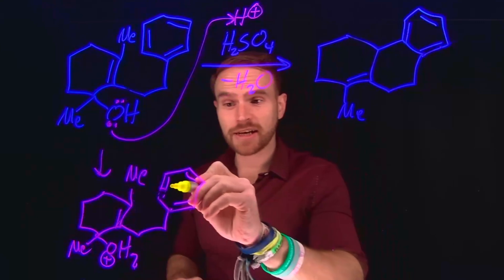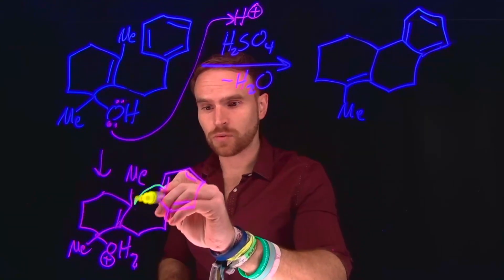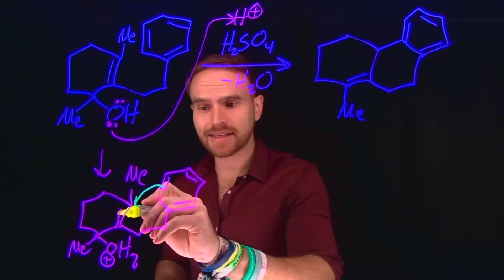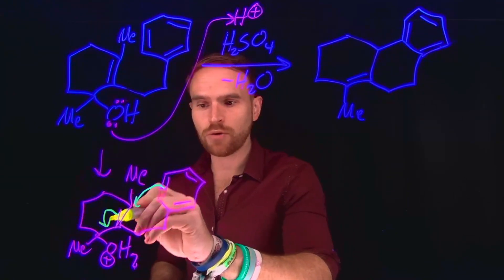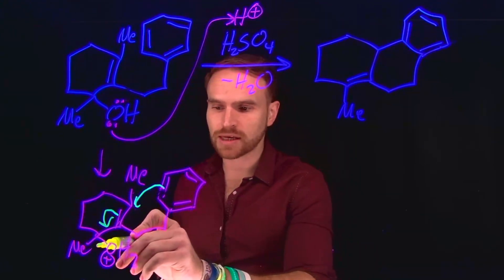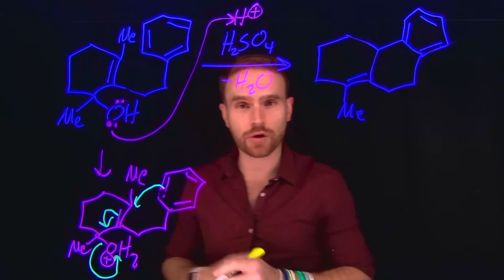And the next step is actually an electrophilic aromatic substitution, where these pi electrons from this benzene ring will come and attack this carbon, resulting in the cascade flow of electrons to move over this pi bond to the adjacent carbon-carbon, and also resulting in the leaving of this group as water.